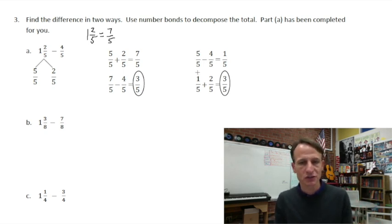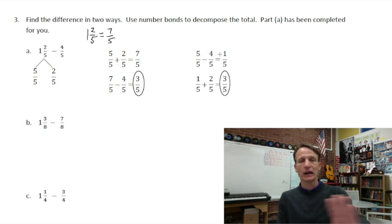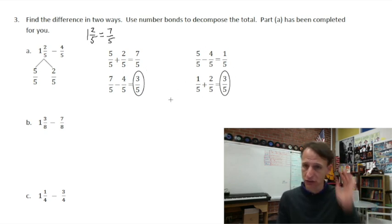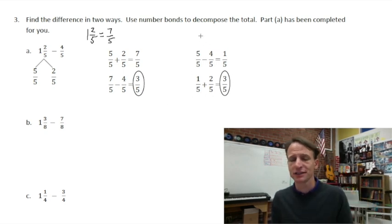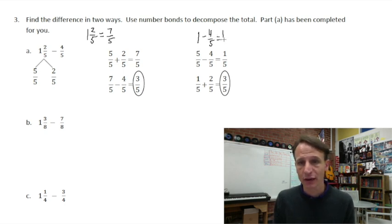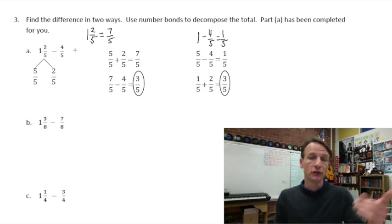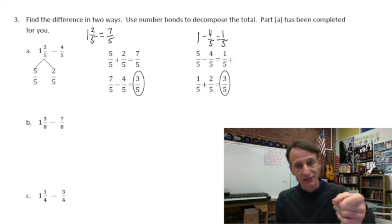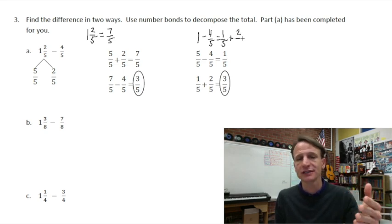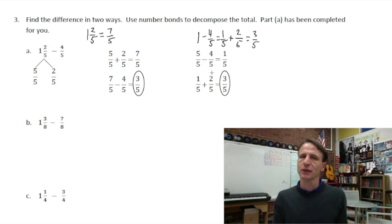There's another method shown: take the 1 whole as 5/5, subtract 4/5 to get 1/5, then add back the 2/5 to get 3/5. Honestly, I don't like this way — it's easy to forget to add those extra fifths back in. I'd call it the scrambled egg method. It works, but it's not my favorite.